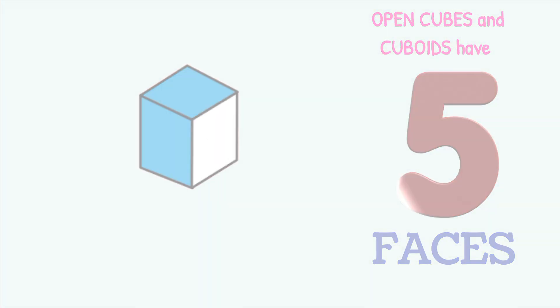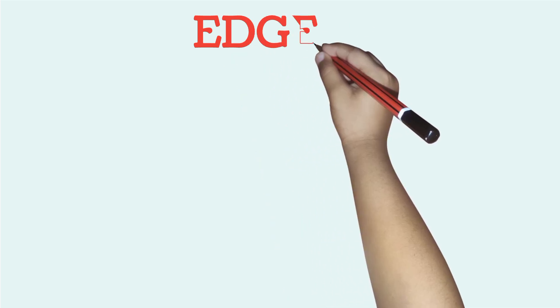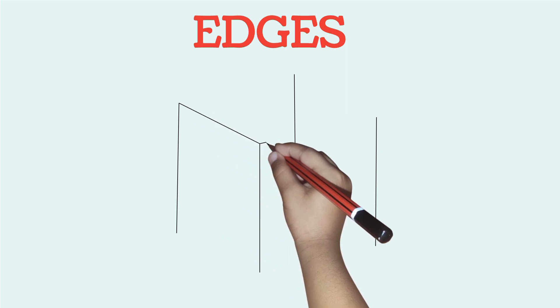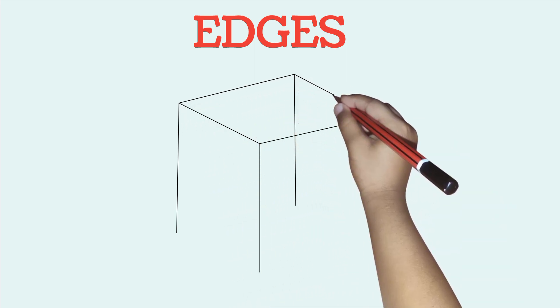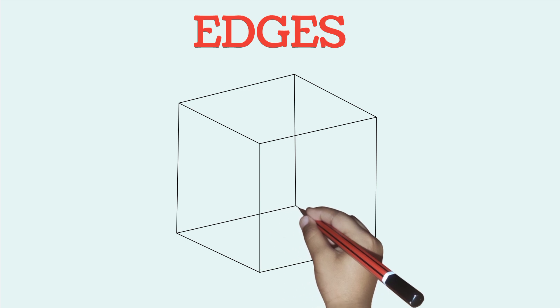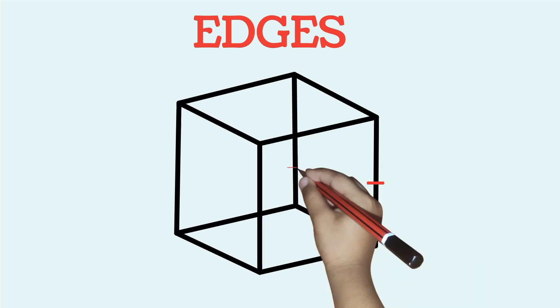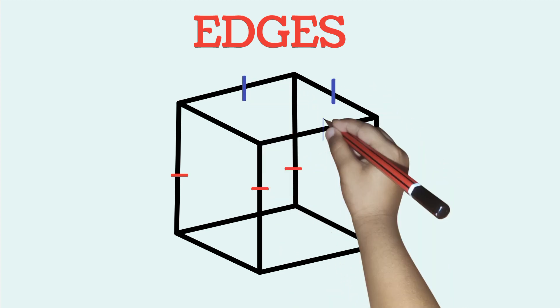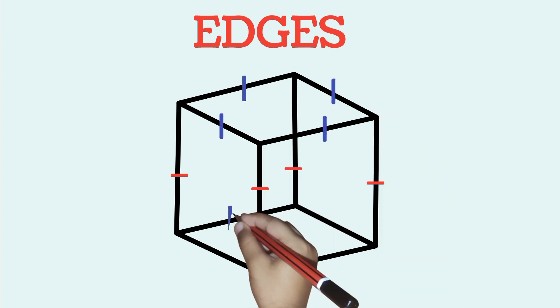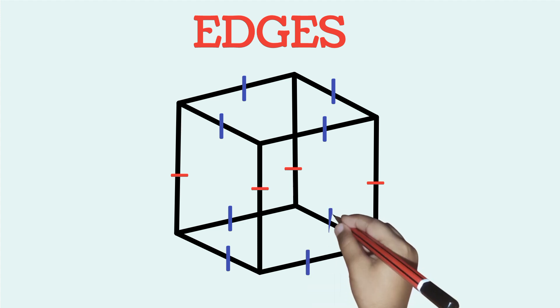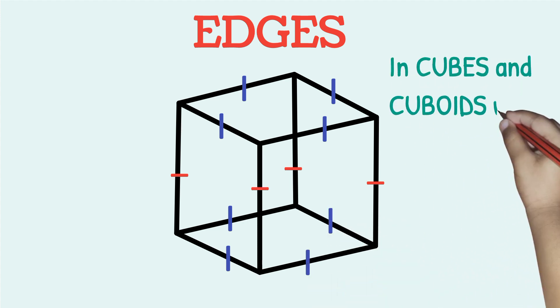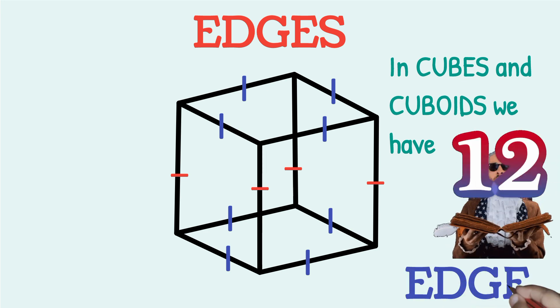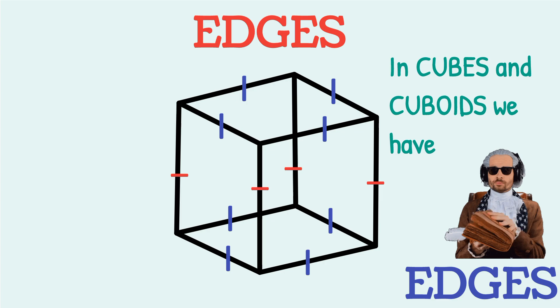Then we go to, so if it is open, it is 5. Let's go to the edges. So you can count them as we draw. This is 1. This is 2. This is 3. This is 4. This is 5. This is 6. 7. 8. 9. 10. 11. And 12. In cubes and cuboids, we have 12 of them. 12 edges.